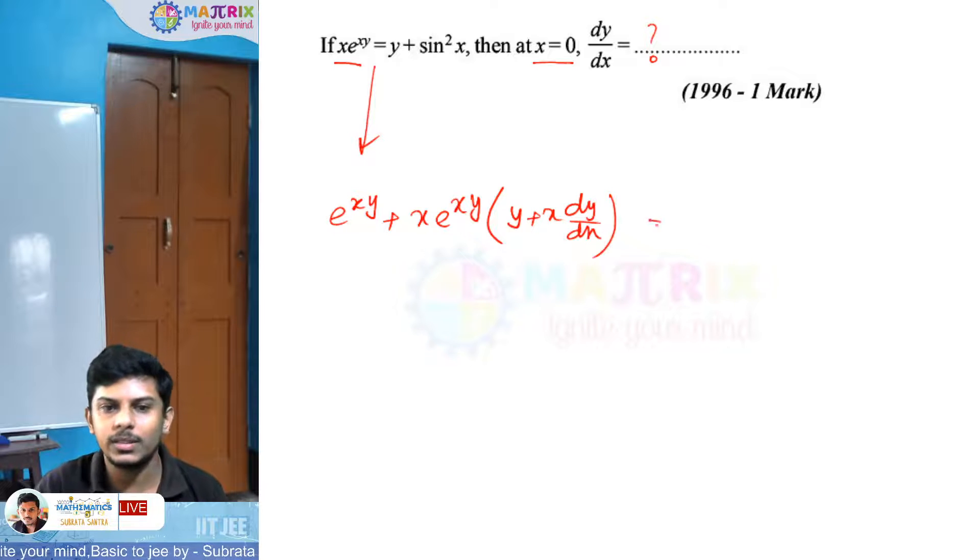The right side differentiation: y differentiation is dy by dx plus sin squared x differentiation gives 2 sin x cos x.